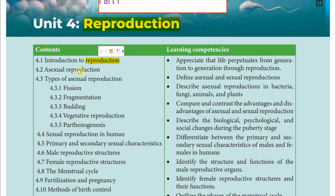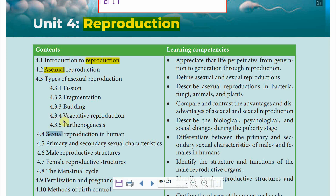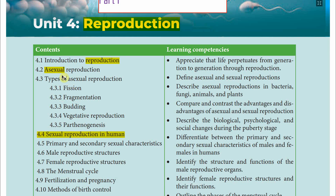Then we will talk about Asexual Reproduction and Sexual Reproduction — the modes of reproduction. Under 4.2 we will talk about Asexual Reproduction, and at 4.3 we will talk about the Types of Asexual Reproduction. There are 5 main types.